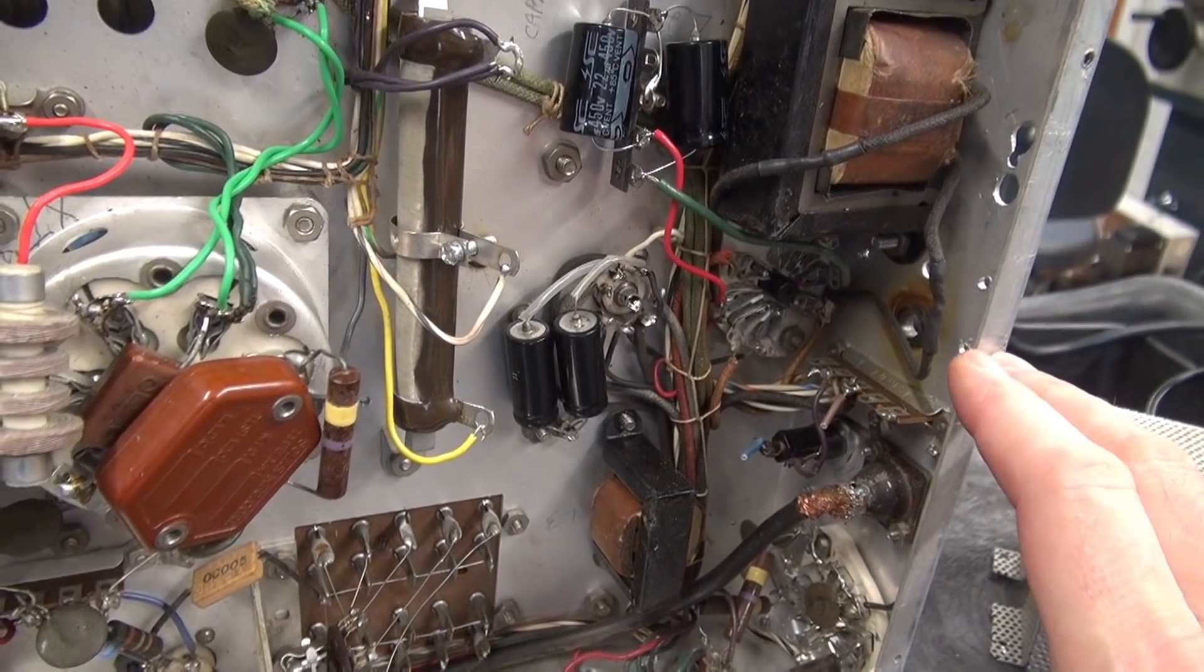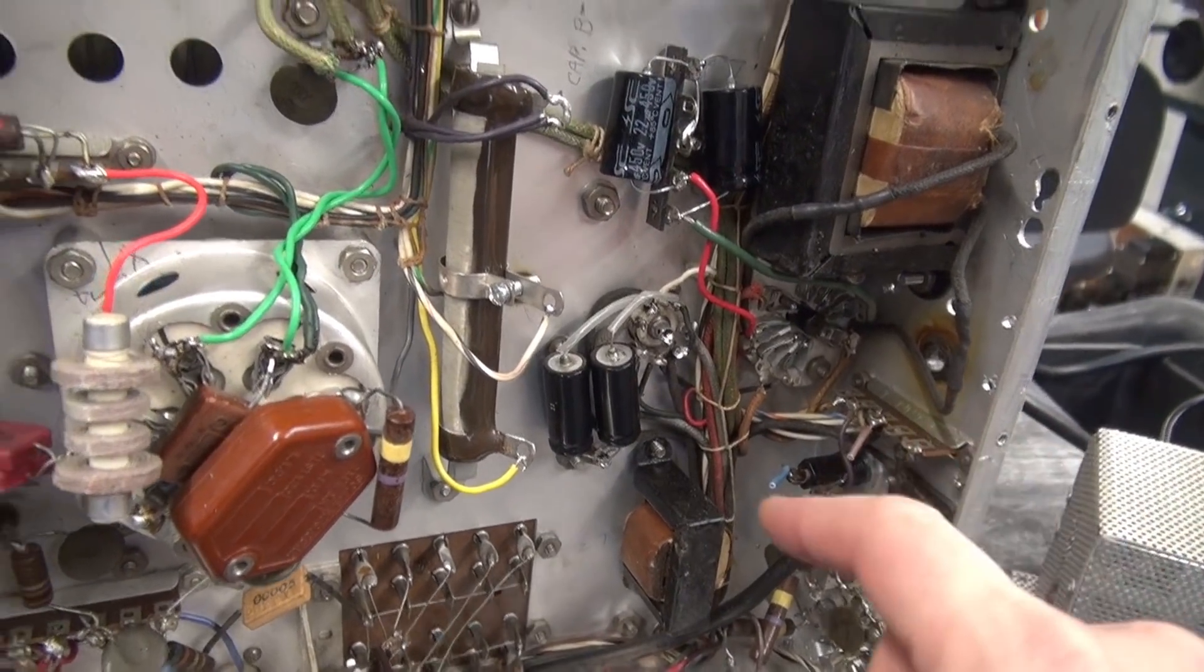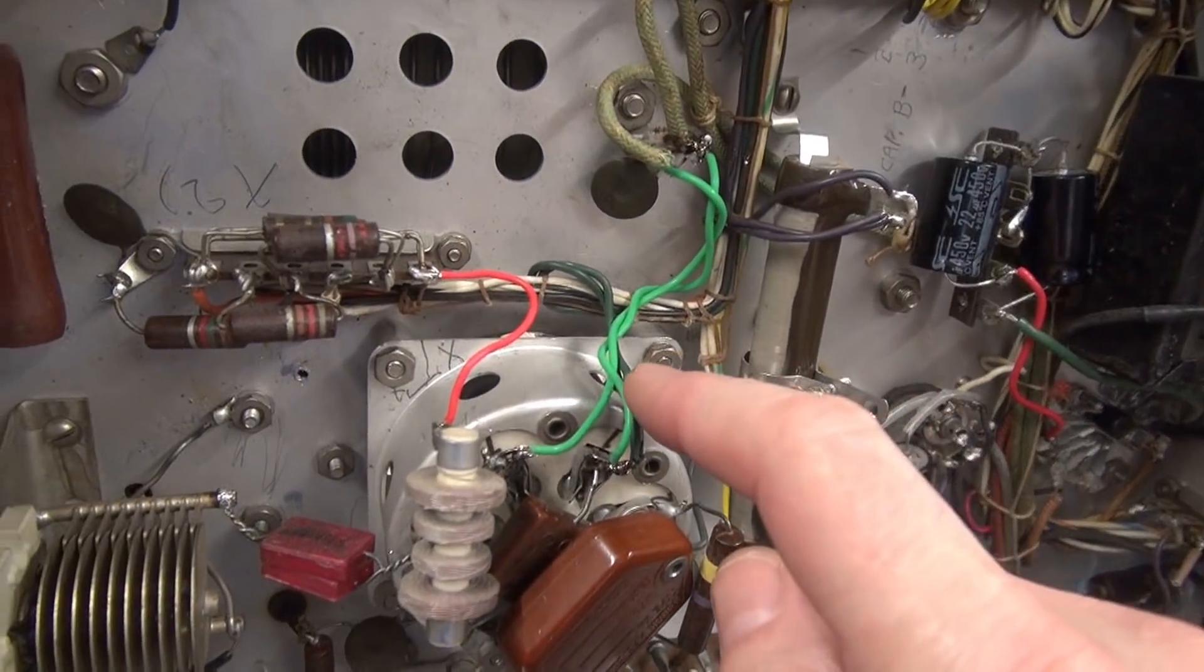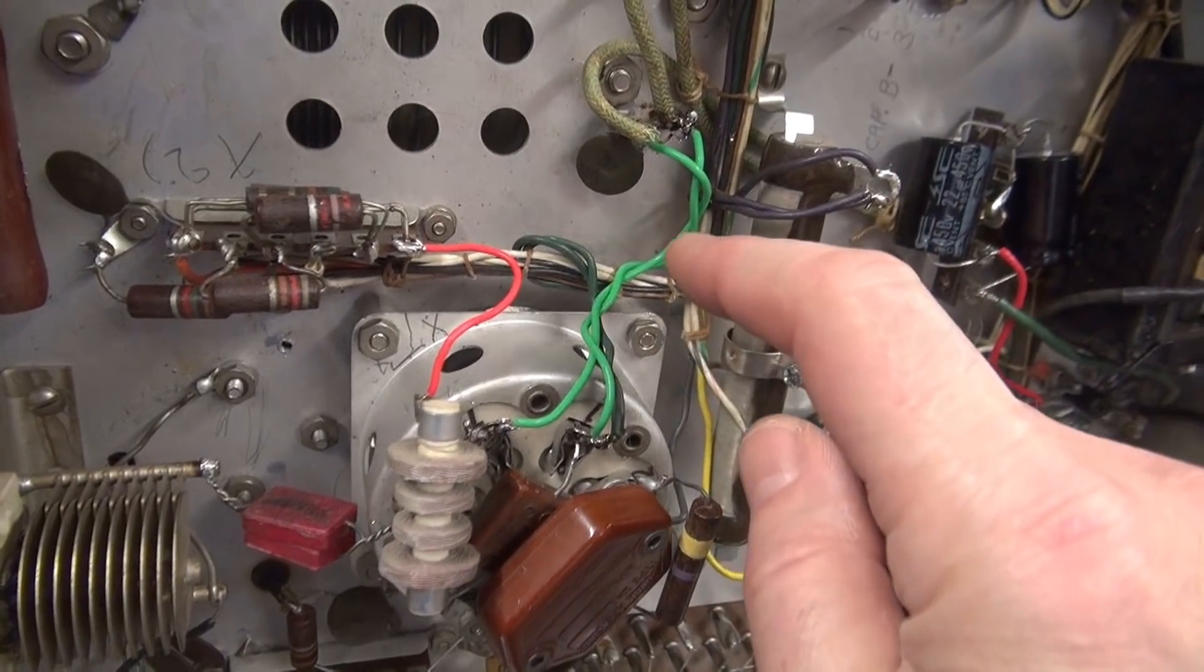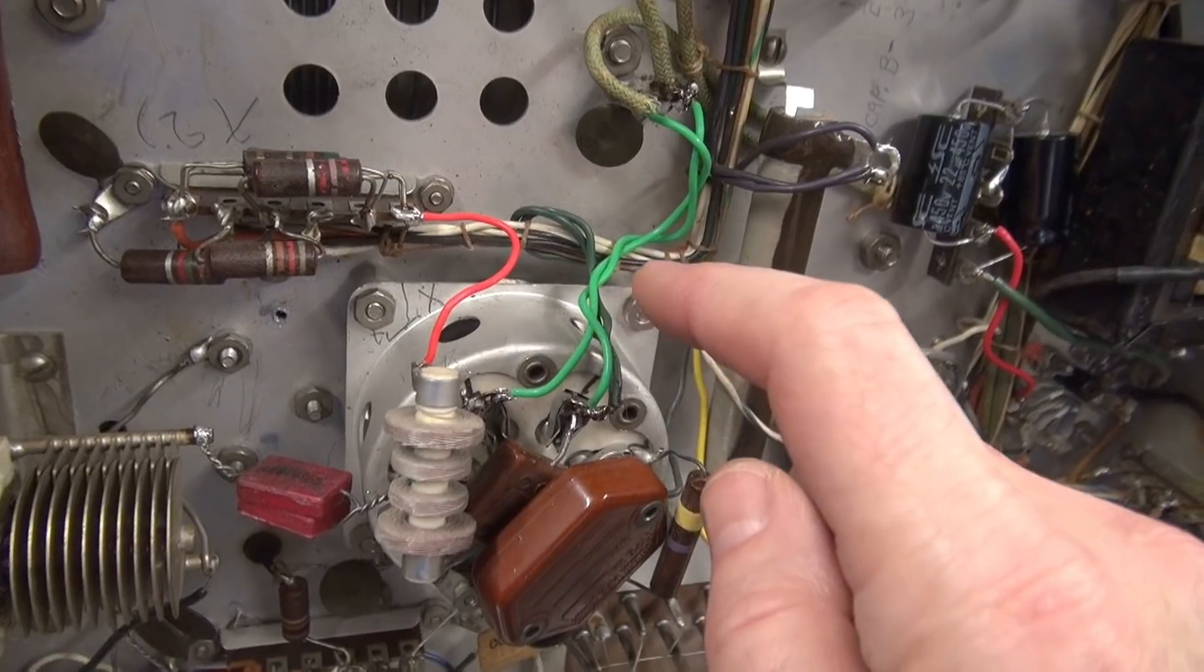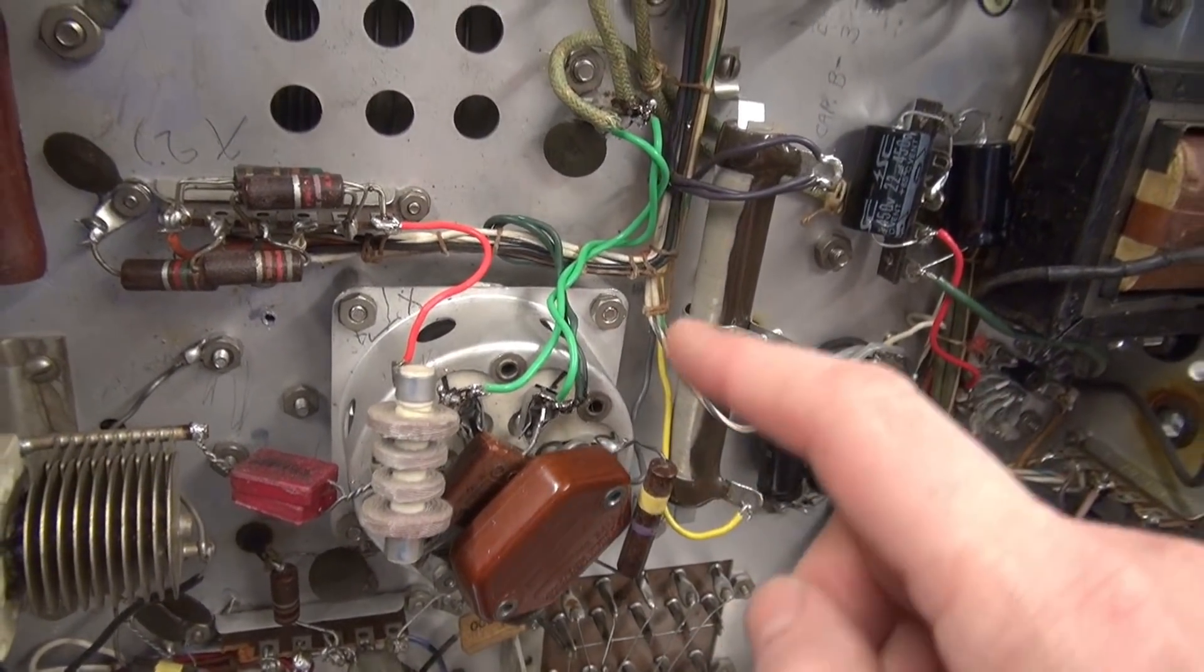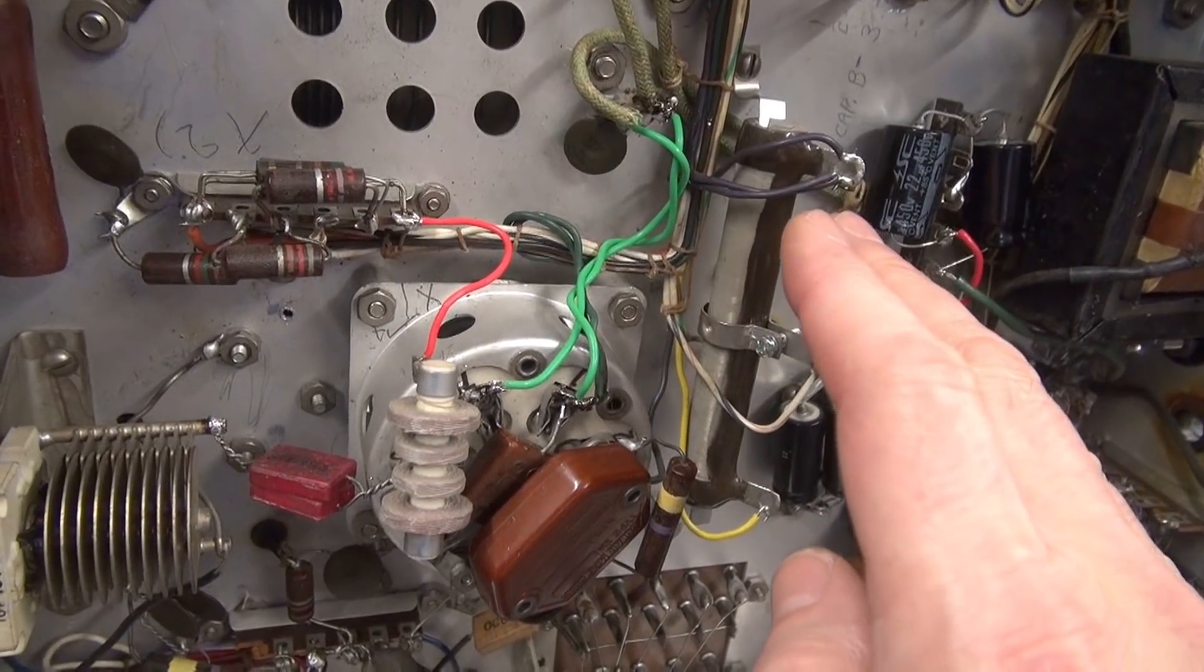I have a filter assembly from a Viking 2, so I'm going to install that back here. The other thing is, there's supposed to be, on the Viking 2, there is a choke in line with the hot lead of the filament supply to the two 6146's. This has nothing,